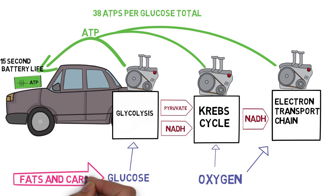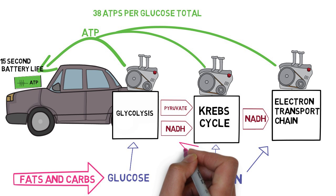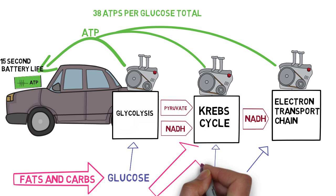Only glucose can be used for the first process of glycolysis. However, fat can be turned into glucose within the liver, or else ketogenic diets wouldn't work. Protein, however, must be broken down into amino acids and can only enter into the second process.